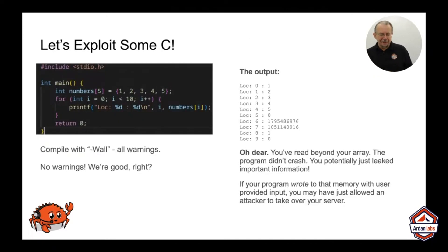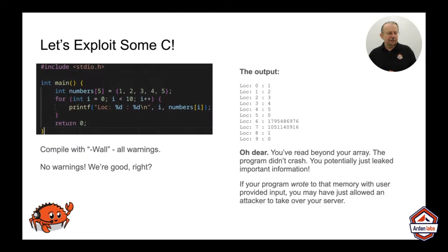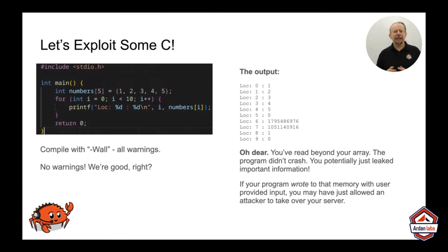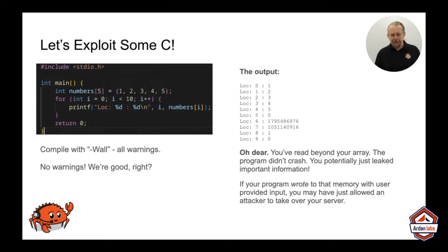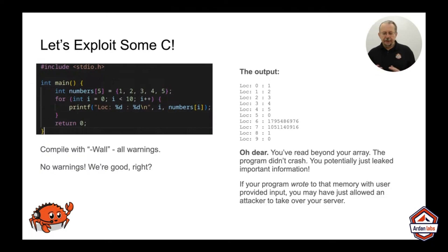Let's have a look at some C. Got a nice simple C program here. Set up a function called main, make an array of five numbers, loop from 0 to 10, print out each of the array items. The good news in answer to Angel's question — if it compiles, it works — is this compiles perfectly. I even compiled it with -Wall to show every warning that GCC would possibly want to spam me with. It informed me that this program is perfectly fine, I have nothing to worry about whatsoever. So here's the downside.